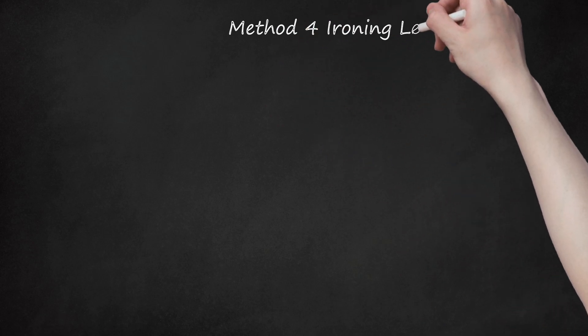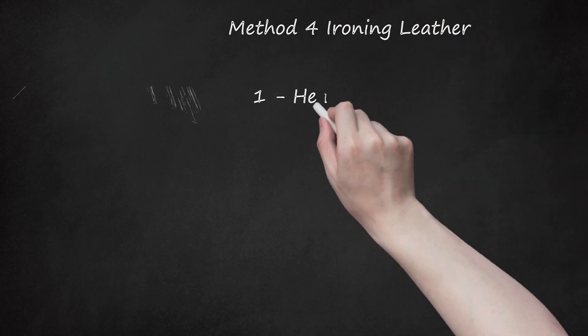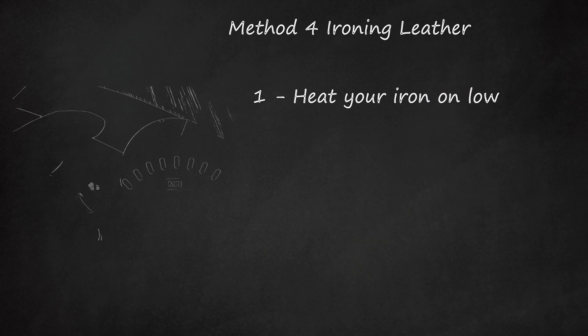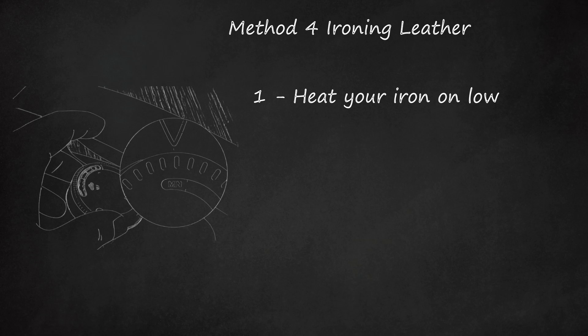Method 4: Ironing Leather. Step 1: Heat your iron on low. Leather isn't made to be ironed, and ironing it poses inherent threat of damage. Help mitigate this by turning your iron to its lowest setting before bringing it in contact with leather.